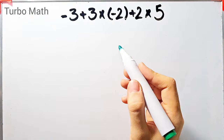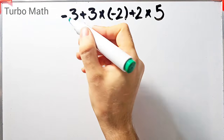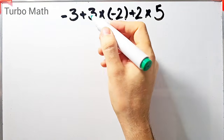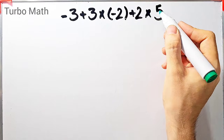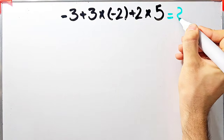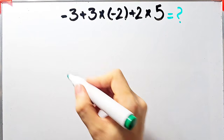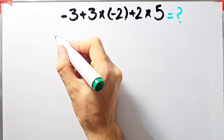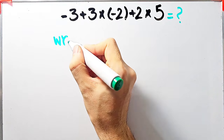In the first question we have: negative 3 plus 3, then times negative 2, plus 2 times 5. What is the answer? Let's look at the wrong way of solving this question.